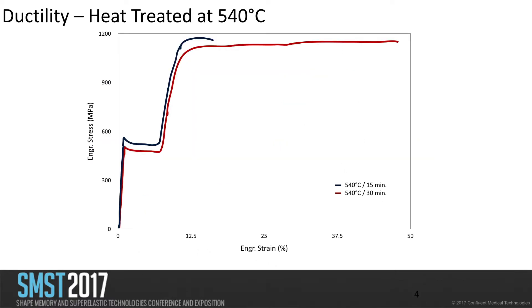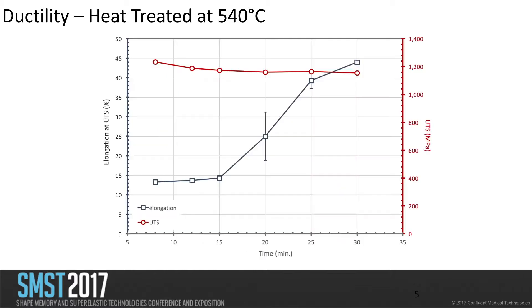We tried the same material at a different temperature to see if we observe the same behavior, and we decreased the temperature. As expected, to see the same behavior we need longer times. Aged for 15 minutes we again see around 15% fracture strain, but increasing to 30 minutes aging it increases to around the same 45% again. We did the same aging time-scale study and you can see that the ductility starts to increase after 15 minutes, reaching maximum elongation around 30 minutes for 540°C.